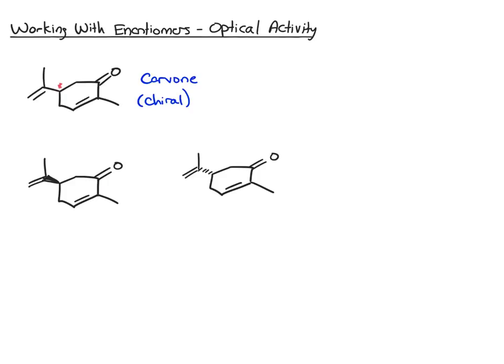If you were to purchase carvone from a chemical company, this structure without stereochemistry is kind of meaningless. So we have the option of purchasing either single enantiomer as a pure compound. The first one is called plus carvone — you can go to a chemical supplier and get pure plus carvone in a bottle. Alternatively, if you want the other enantiomer, it's called minus carvone.